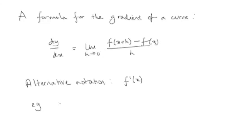So, to summarize then, we've shown that a formula for the gradient of a curve is the limit as h tends to 0 of f of x plus h minus f of x divided by h. A common notation for that is dy by dx, and an alternative notation is f dashed x, or f primed of x, people sometimes call it. So, for example, for y equals x squared, we've got dy by dx equals 2x. The gradient function of x squared is 2x. It's exactly the same thing as saying if f of x is x squared, f primed of x is 2x.